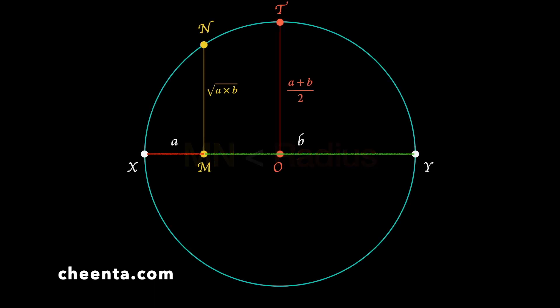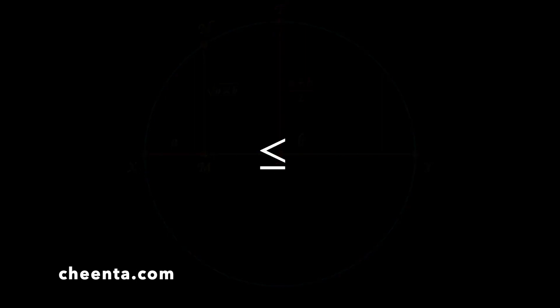We notice that MN is less than the radius. Any half-chord will be less than the radius because any chord is less than the diameter. MN is a half-chord which is not the radius because M was not the center. So the radius is definitely larger than MN, which gives us the inequality that √(ab) ≤ (a+b)/2.